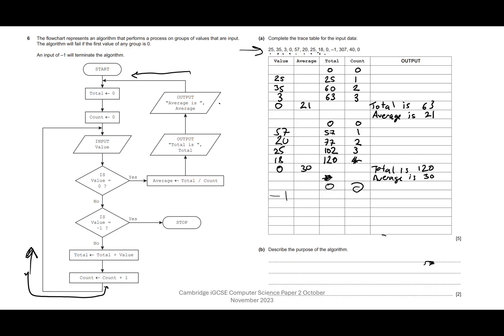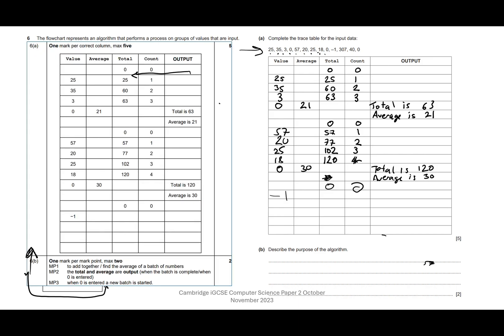The mark scheme gives one mark per correct column — they look down the columns and check you've got everything that should be there. We've got those five marks. For part B, one mark per point, maximum two: the purpose is to add together and find the average of a batch of numbers. The total and average are output when the batch is complete — when zero is entered a new batch is started. You can also mention that entering minus one stops the program.